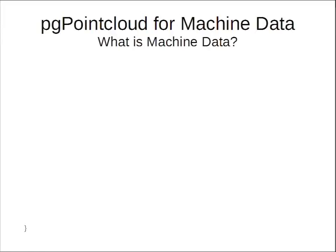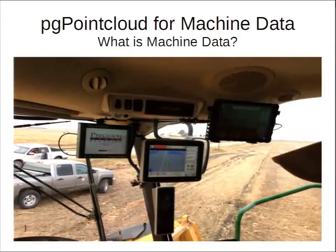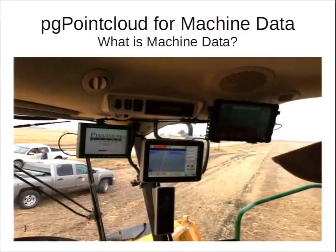So what is machine data? It starts with something simple: it comes out of a piece of equipment that goes out in the field. Most of these machines are worth a quarter million to a million dollars a piece, so they come with a lot of gizmos — including monitors, which are really data loggers hooked up to a bunch of sensors, GPS units, and everything. Their goal is to collect as much data as possible about what this machine is doing at any moment in time.